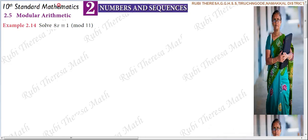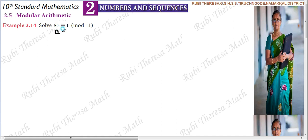Next example, example 2.14: Modular Arithmetic. Solve 8x is congruent to 1 mod 11. So, 8x is congruent to 1 mod 11.